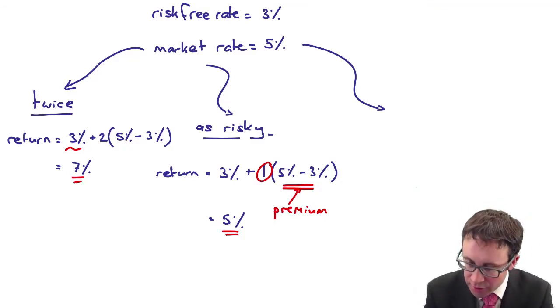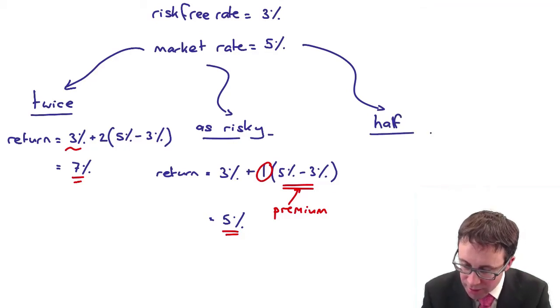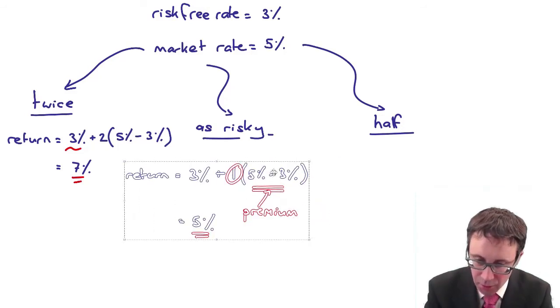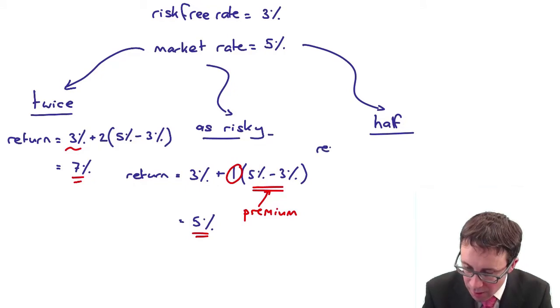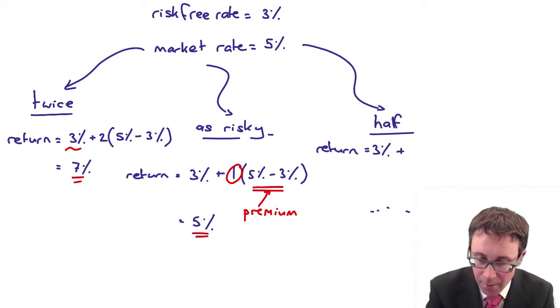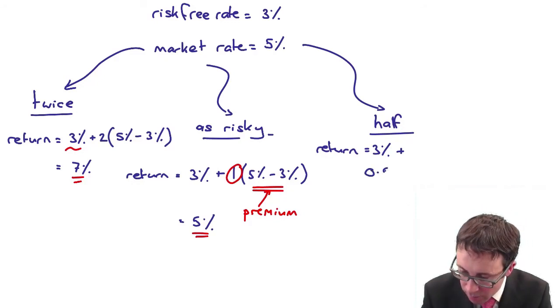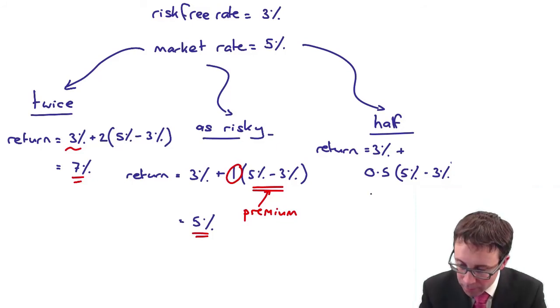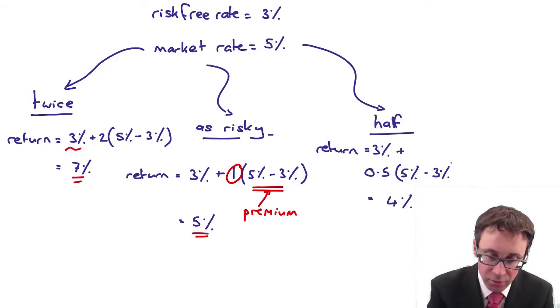Just to finish it off, so you can see it in full, let's just say the investment is half as risky. I'm running out of space, let me squeeze it over a bit. And then what you've got is that the return is going to be 3%. And then we add on a return that is half as risky as the market. So 5 less 3 is 2, half of 2 is 1, so that gives me 4%.